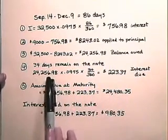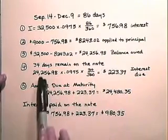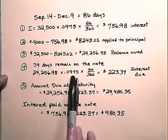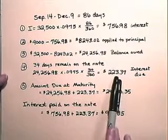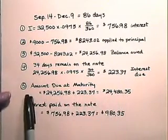Step 4, we see that 34 days remain on the note. We calculate the interest on $24,256.98 at 9.75% for 34 days to get the interest due of $223.37.